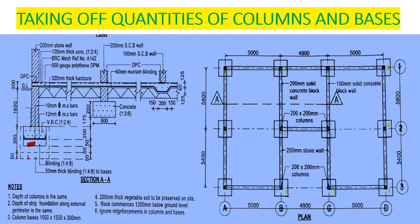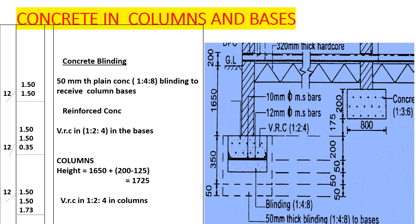Let's start with the concrete blinding. Our blinding is 50 millimeters thick, mix 1:4:8. Remember, if it's 50 millimeters thick we book it in metres squared. We need the size of the column base, which is 1.5 by 1.5, and we have 12 columns. We describe this as: 50mm thick plain concrete, mix 1:4:8, blinding to receive the column bases.